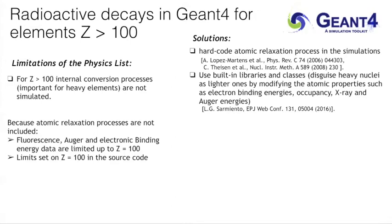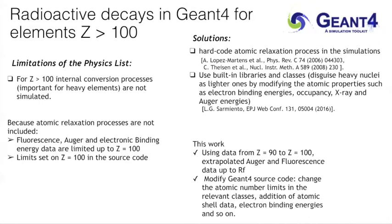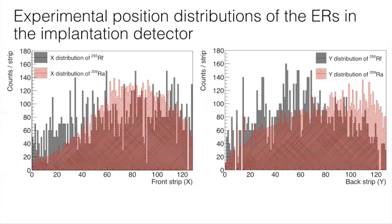In this work, we extended the GEANT4 data by extrapolating the Auger and fluorescence data from Z=90–100 up to Rutherfordium, and modified the source code to properly simulate radioactive decays beyond fermium. We also added atomic shell data and electron binding energies. Simulations also require the position distributions of the evaporation residues, which can be obtained experimentally from strip numbers.